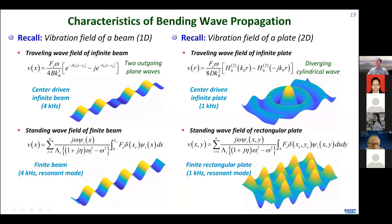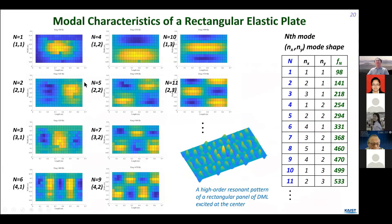These show the modal characteristics — first mode, second mode, third mode — depending on the number of nodal lines where amplitude is zero. We have one zero-amplitude line, two zero-amplitude lines, three, four — these are nodal lines. If you list the frequencies, as you increase frequency, resonance frequencies are encountered. Consequently, traveling from low to high frequency, we meet many resonances as we travel toward the high-frequency range.